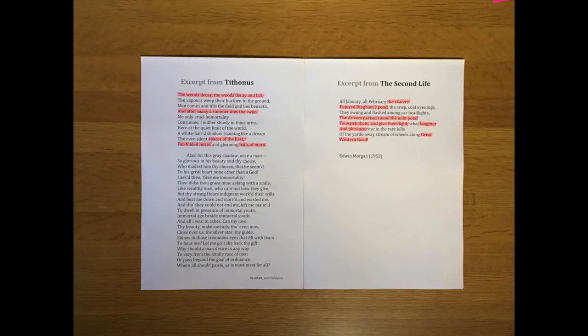In the opening lines of Tythonus, he talks about the things that die. And when he talks about the woods decay, the woods decay and fall, it isn't just that the leaves fall in autumn, it's the fact that if you actually live long enough, you get to see the whole forest die of old age. And the swan dies, and the significance of these things to Tythonus is that he envies them. There's actually at this point nothing he would like better than to be able to die.